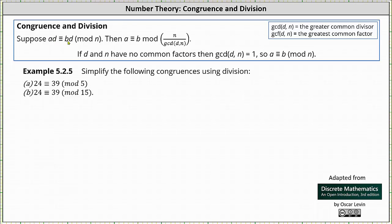If AD and BD share a common factor of D, we can divide both by D. However, we must also divide N by the greatest common divisor or the greatest common factor of D and N. If D and N have no common factors other than one, meaning they're relatively prime, then the greatest common divisor of D and N is equal to one, which gives us A is congruent to B mod N.